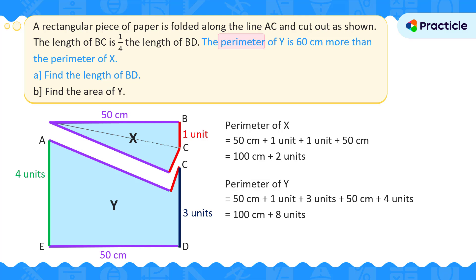Now let's go back to the sentence we were looking at earlier: the perimeter of Y is 60 centimeters more than the perimeter of X. What's the difference when we compare them? These two 100s are the same, but the number of units is different. 8 units minus 2 units is 6 units. In other words, we now know that 6 units represent 60 centimeters. Well done!